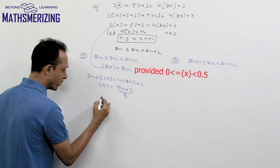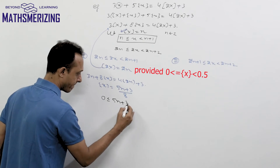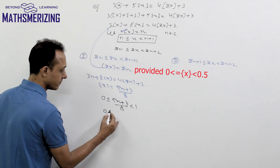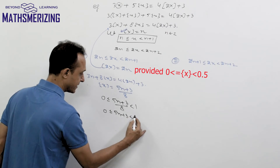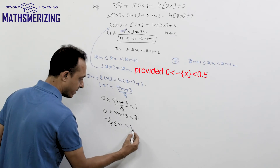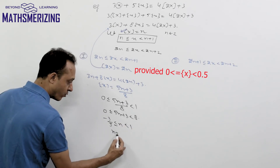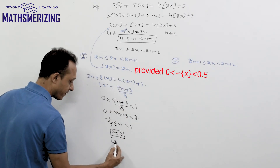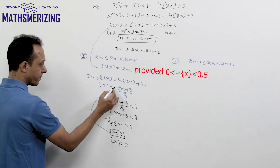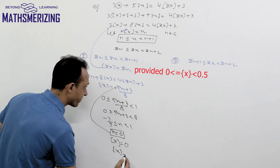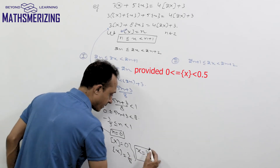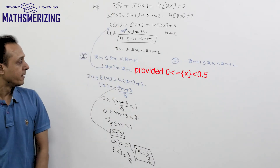Now the fractional part of x must lie between 0 and 1. So I write 0 ≤ (5n + 3)/8 < 1, which gives 5n + 3 is less than 8, so n is between minus 3 over 5 and 1. The only possible integral value of n in this case is 0. So the greatest integer function of x equals 0, and putting n equal to 0 gives the fractional part of x as 3 over 8. Adding integer and fractional parts, the value of x is simply 3 over 8.